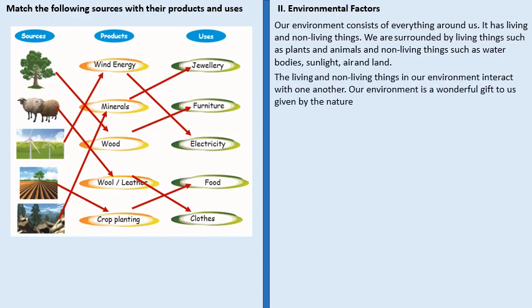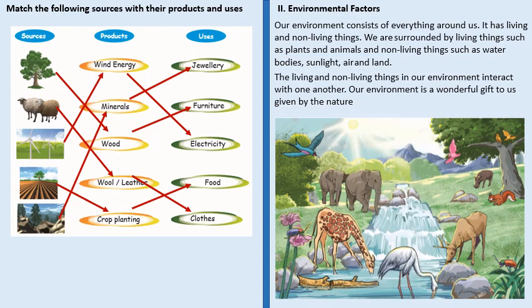Here we are going to talk about the environmental factors. The environment consists of everything which is around us, and it has living and non-living things. We are surrounded by living things like plants and animals, and also non-living things like water bodies, sunlight, air and land. These living and non-living things interact with one another. Our environment is a wonderful gift to us by nature.